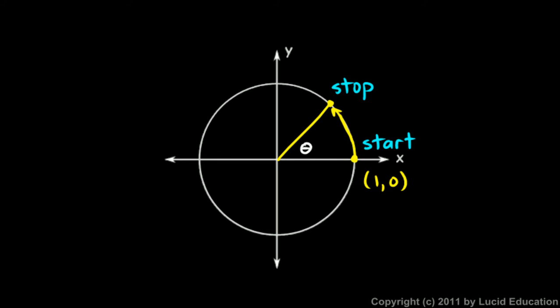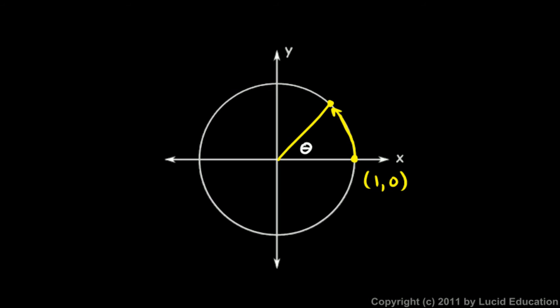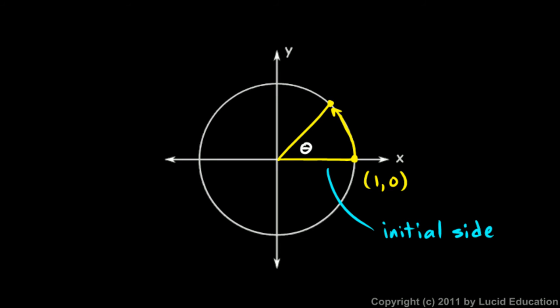The next diagram has both sides drawn in. If we start here and rotate in this direction, we can think of this as the first side of the angle — the initial side — and this is the second side, the terminal side. Those are just some terms that are good to know, and they're reasonable names: the initial side is where we start and the terminal side is where we stop.